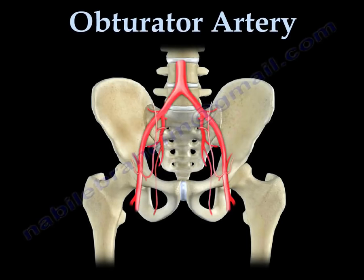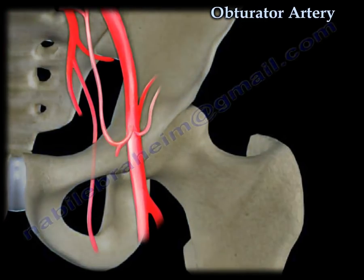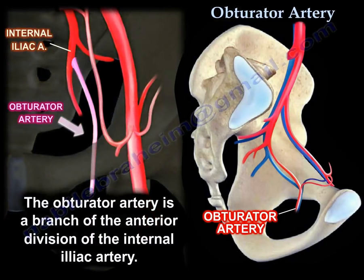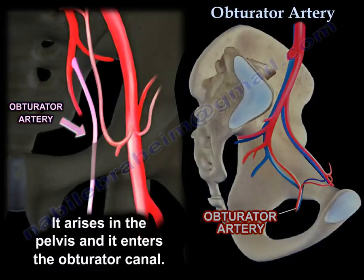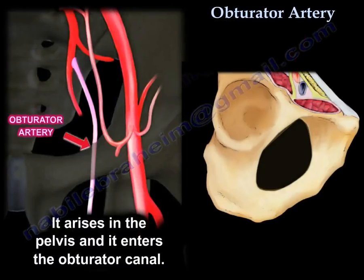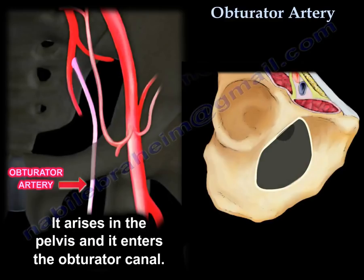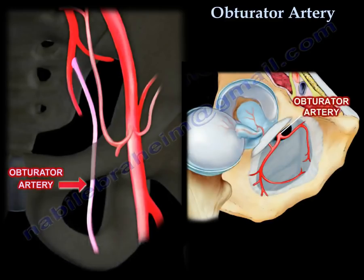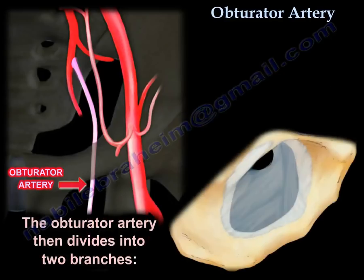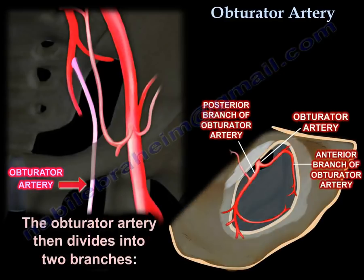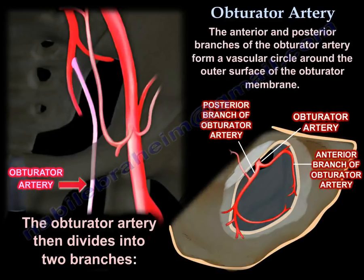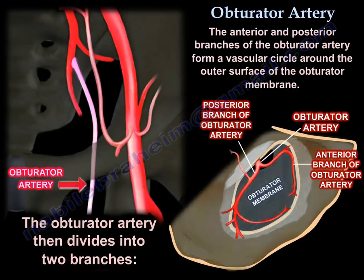The obturator artery is a branch of the anterior division of the internal iliac artery. It arises in the pelvis and enters the obturator canal, where it divides into two branches — the anterior and the posterior branch — which form a vascular circle around the outer surface of the obturator membrane.